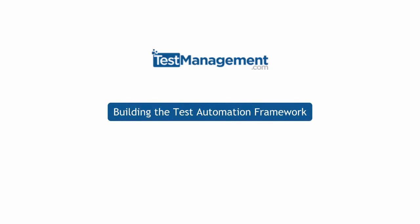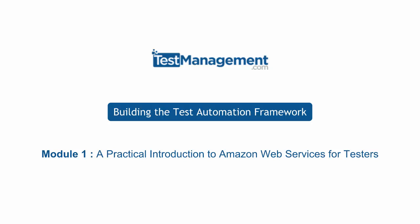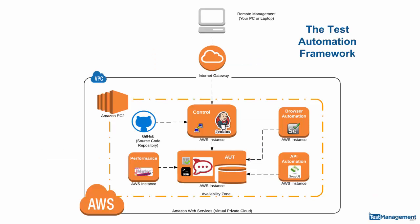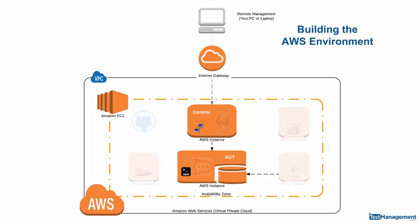Building the Test Automation Framework - Module 1: A Practical Introduction to Amazon Web Services for Testers. This is the first module in a six-module course on building the test automation framework. It starts with Amazon Web Services - we're going to use AWS, and more specifically Elastic Compute Cloud, to build our test environment and automation system. It all starts with configuring and running the virtual machines we need. In this module we're focusing on building a control machine, which will be a Windows 2008 box, and a Linux machine running Ubuntu, which will run our application under test.